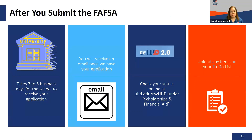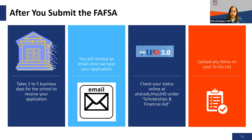After you submit the FAFSA, what happens next? It takes about three to five business days for us to receive your application electronically from the Department of Education, as long as you add UHD as a school on your application. Once we receive it, we upload it into our system and send you an email letting you know we received your application. You can check your status at any time online at uhd.edu/myuhd and click on 'Scholarships and Financial Aid.' If we need additional information, we will send you an email letting you know you have items to complete on your to-do list.